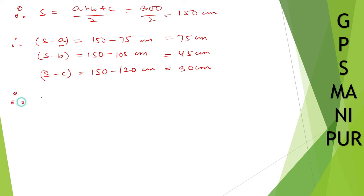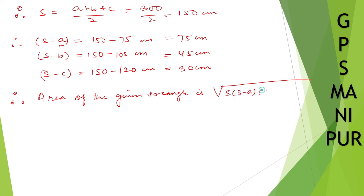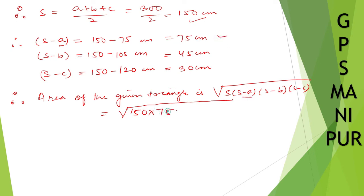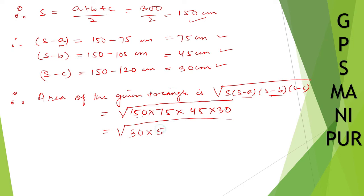Therefore, area of the given triangle — using Heron's formula: area equals square root of s(s-a)(s-b)(s-c). Substituting: square root of 150 into 75 into 45 into 30. I can write 150 as 30 into 5, and 75 as 15 into 5, and 45 as 15 into 3.